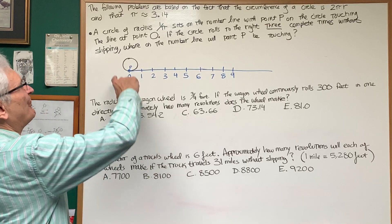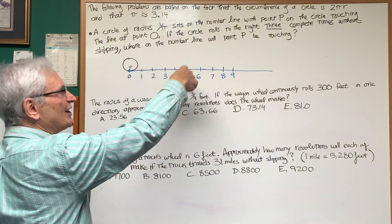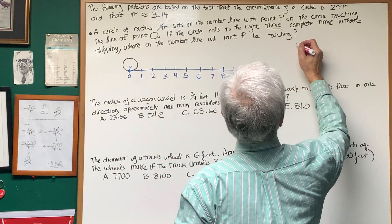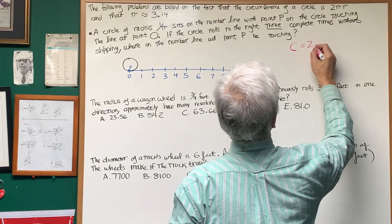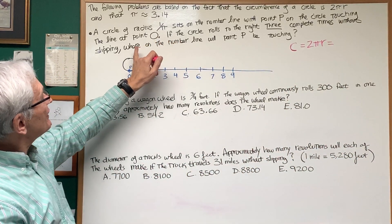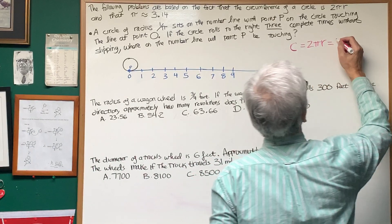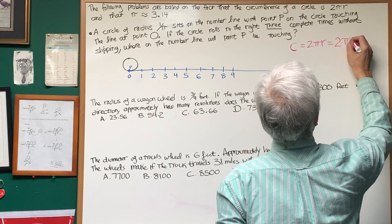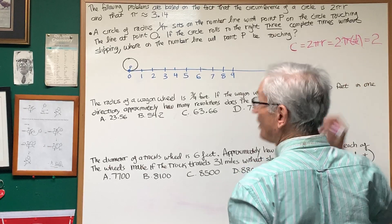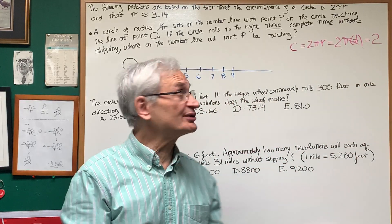What we're looking for is a point on the circle that's three circumferences to the right. So let's calculate what one circumference is. One circumference is 2πr. We know that the radius given is 1 over π, so it's 2 times π times 1 over π. That cancels, and one circumference is therefore 2 units.